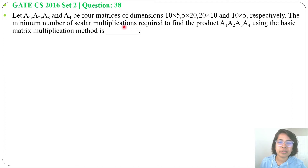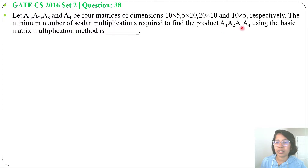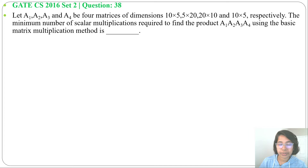Let's solve a previous question on dynamic programming. This question was asked in GATE CS 2016 Set 2, Question 38. Let A1, A2, A3, and A4 be four matrices. The minimum number of scalar multiplications required to find the product A1·A2·A3·A4 using the basic matrix multiplication method is asked.